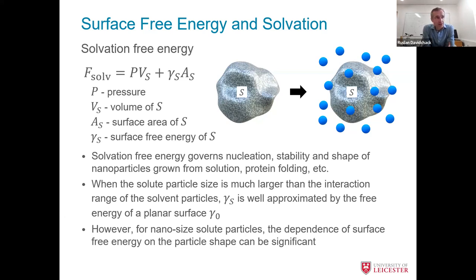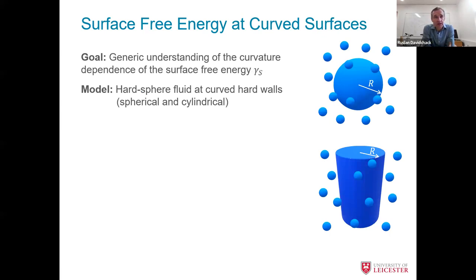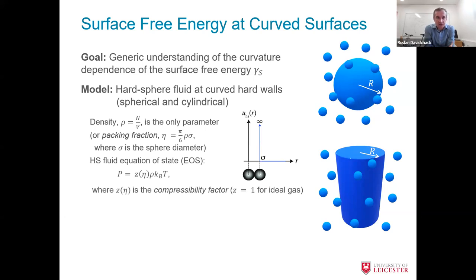How can we characterize this quantity better? One obvious connection is to the curvature of the shape. When we started this investigation about 12 years ago, the generic goal was to understand how surface-free energy depends on curvature. We go with the simplest possible model — hard spheres. My PhD thesis was around hard spheres some 25 years ago, and one of the nice things about hard spheres is that the interaction is very simple. The only parameter is the density or packing fraction eta, which is dimensionless.